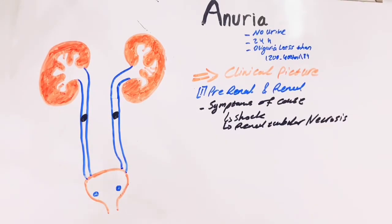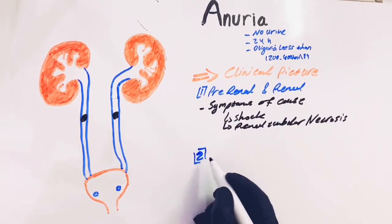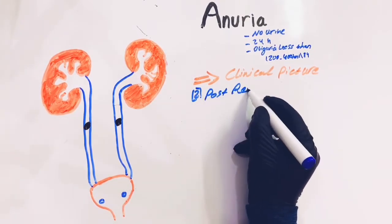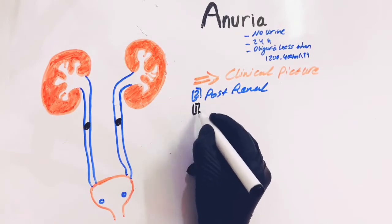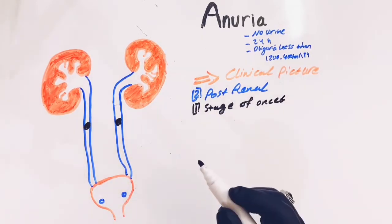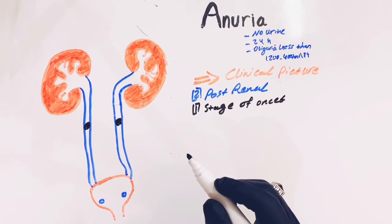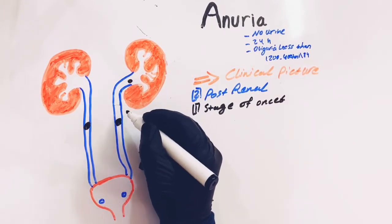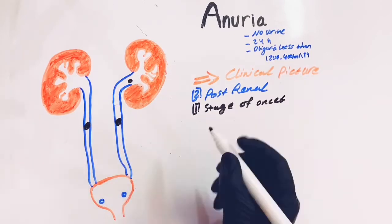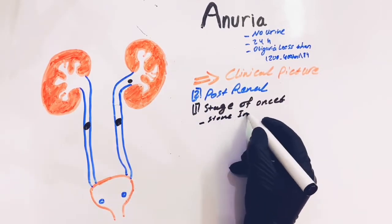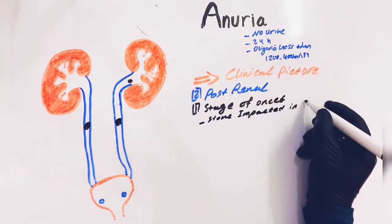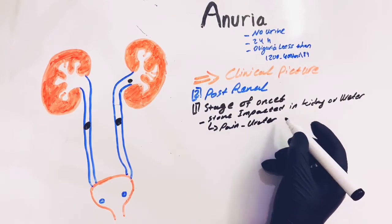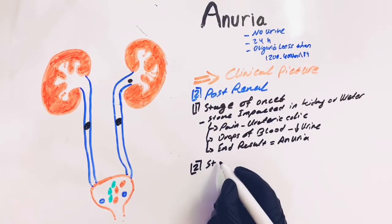For postrenal causes, the clinical picture is divided into three stages. The first stage is the stage of onset. In this stage, the stone is impacted in the kidney or the ureter, leading to severe pain and ureteric colic. The stone may ulcerate the mucosa, leading it to bleed. In this stage, the urine decreases dramatically, eventually reaching anuria and stoppage of urine excretion.